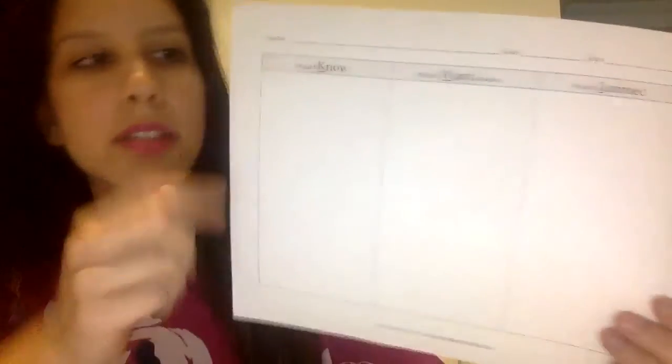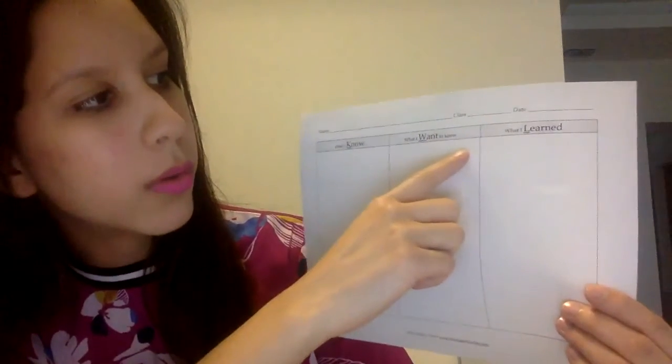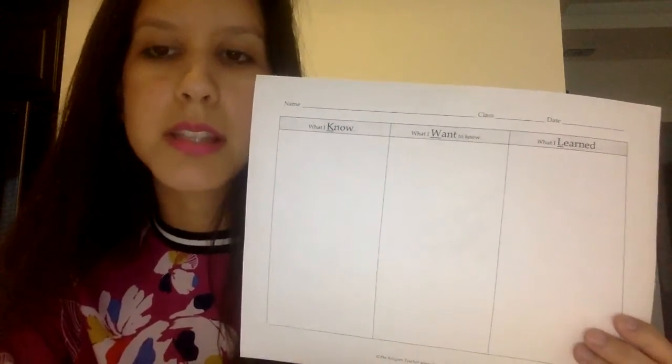Then you show the story, but before you read it, you are going to use the KWL chart activity. The KWL chart is available to you on this webpage — just click on the link below this video and it will take you to the template. You can print it out or use a blank paper and just write the titles: what I know, what I want to know, what I learned.